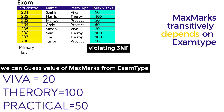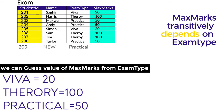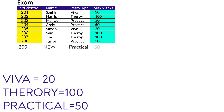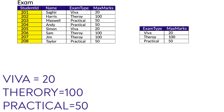If a student of ID 209 opts for a practical exam, we'll already know the maximum marks would be 50. This is the classic case of violating Third Normal Form. We'll break the maximum marks column and put it in another table — now there is no transitive dependency between the tables.